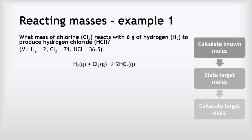Example one: what mass of chlorine reacts with 6 grams of hydrogen H2 to produce hydrogen chloride HCl? We're going to follow the same method for all the examples: calculate the moles of the thing we know, state the number of moles of the thing we're finding, then calculate the mass. The known substance is 6 grams of hydrogen, and the target is chlorine.